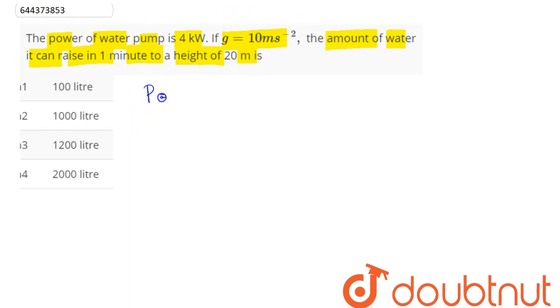So power can be said as work done per unit time. We can say here the water pump raises the water and does the work of gaining potential energy, which is mgh divided by time t.